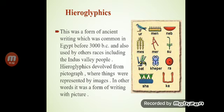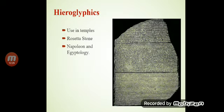In other words, hieroglyphics was a form of writing with pictures. You can see in images that birds, arms, and other symbols are used. Hieroglyphics used symbols to explain meaning — a symbol representing anything special. Hieroglyphics were used in temples, on the Rosetta Stone, and were key in Egyptology through Napoleon's campaigns.